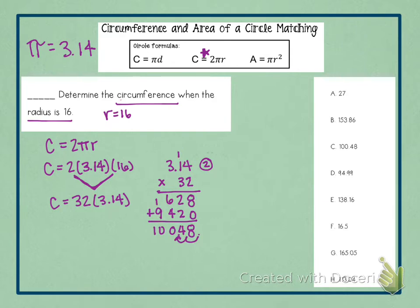So when you multiply those two numbers times each other, you should have gotten 10,048. And then we place our decimal back into the problem, moving it to the left two times. And our circumference is 100.48. So we are going to go over to our matching and notice that here is 100.48. So your answer, or your letter to number one, is C.